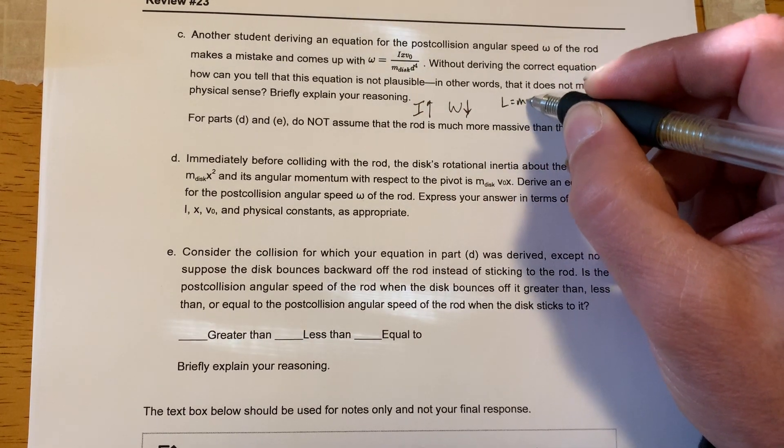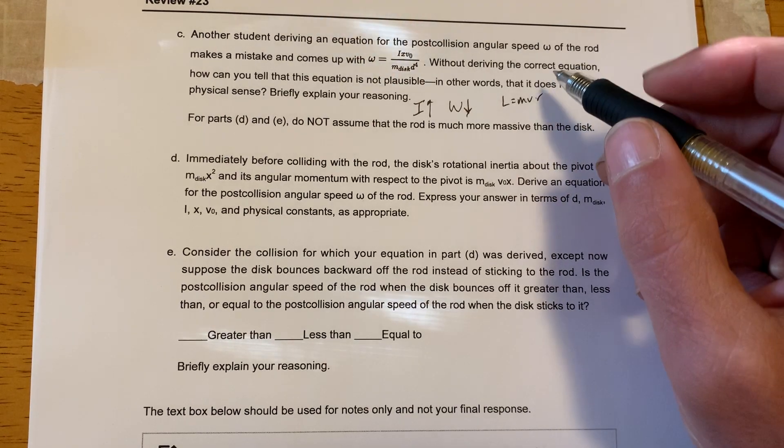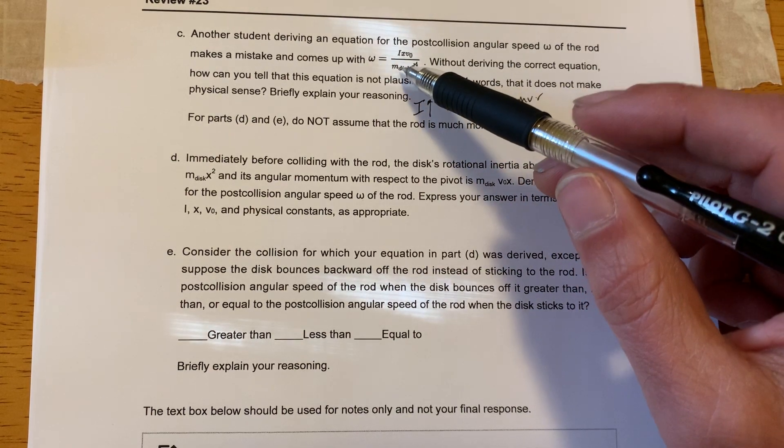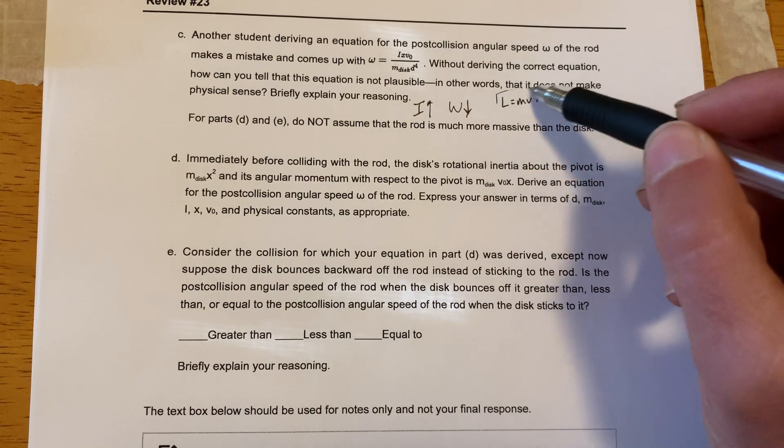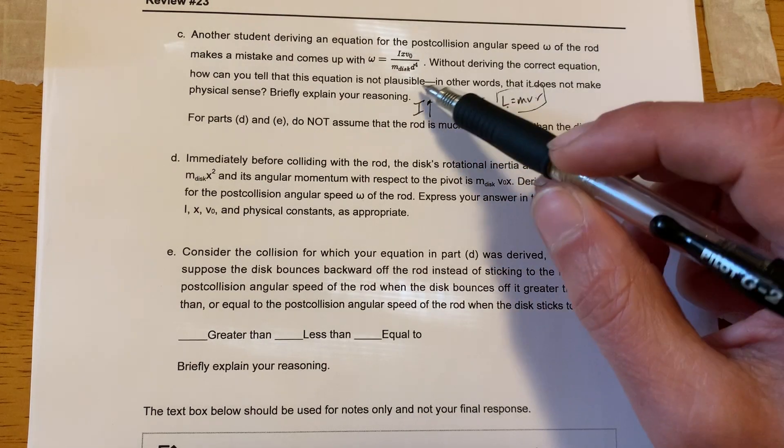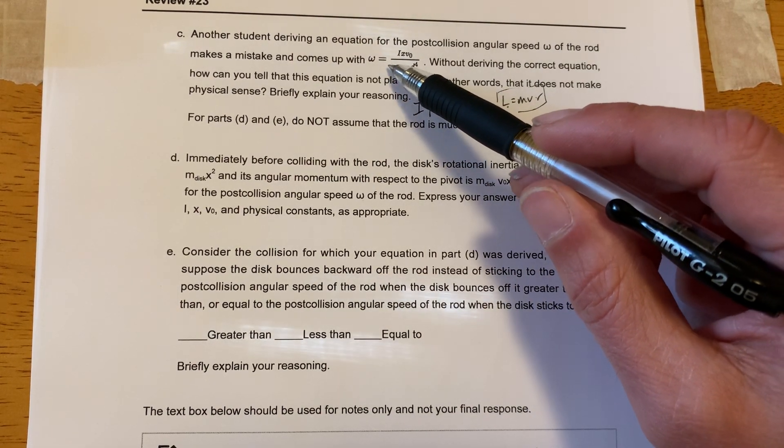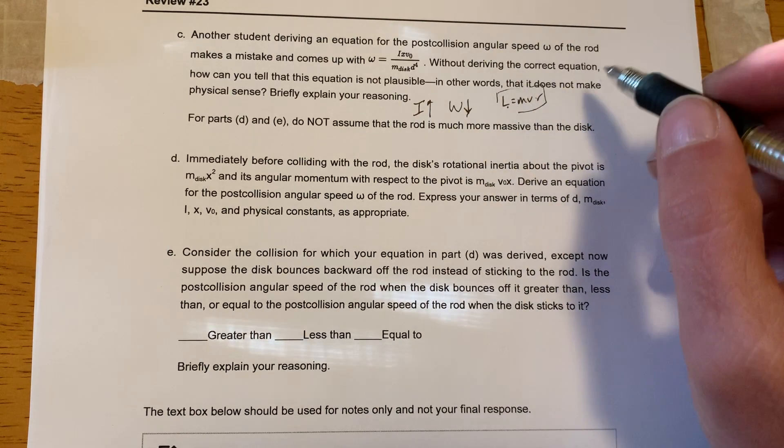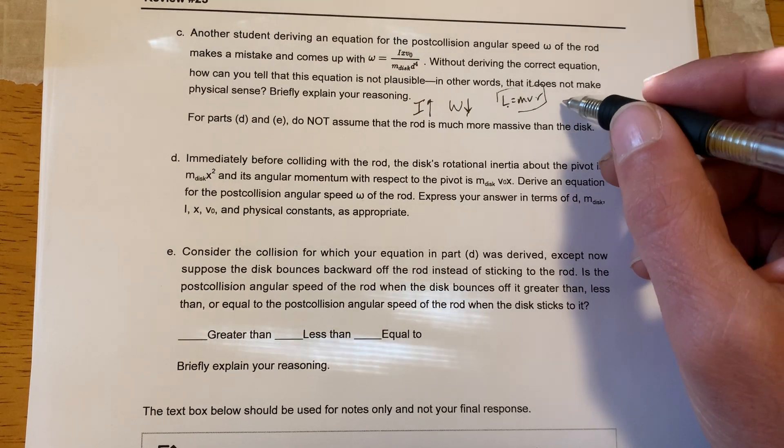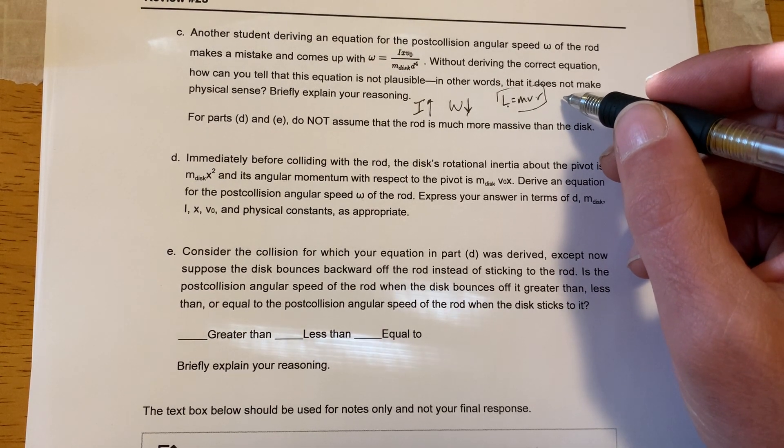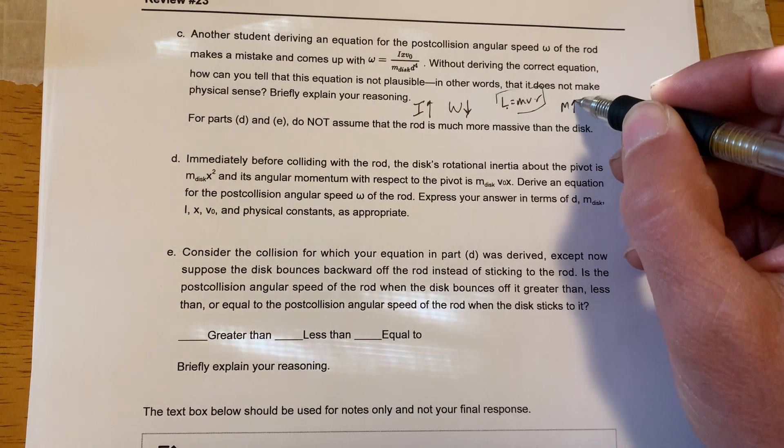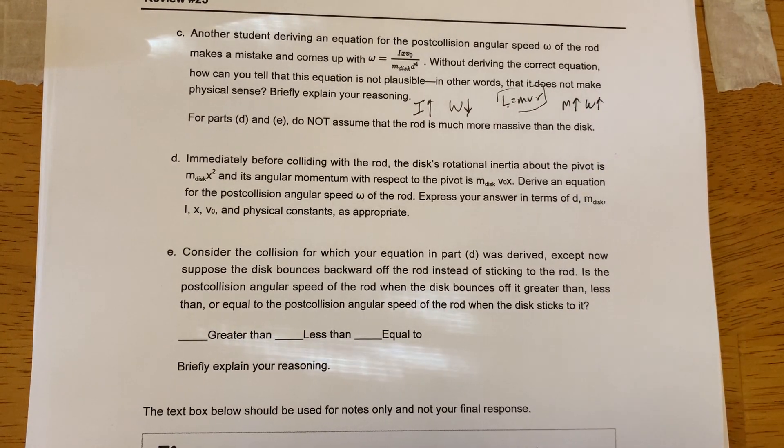I would say that L is equal to m v r. So how are these related? This is saying as the mass gets bigger, my angular momentum gets bigger. However, this is saying as my mass gets bigger, my angular speed gets smaller. So here's another reason why this is not plausible. Because really, m should be directly related to omega.